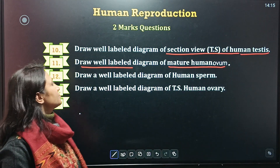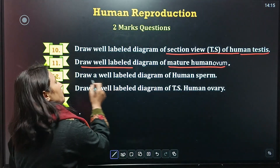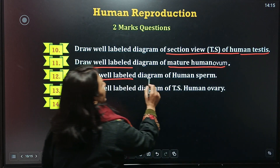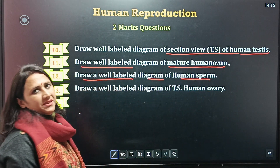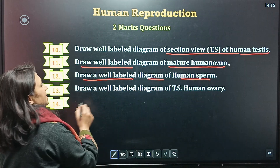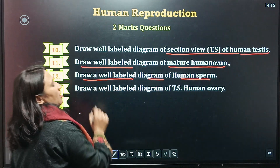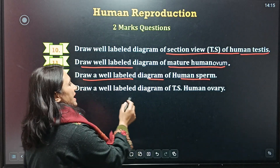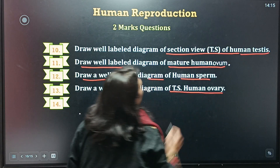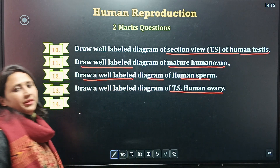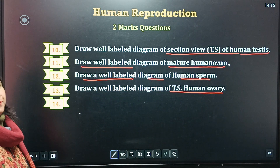Twelfth question is: draw a well-labeled diagram of human sperm. Next is: draw a well-labeled diagram of TS of human ovary.